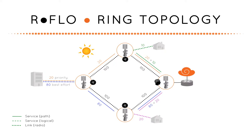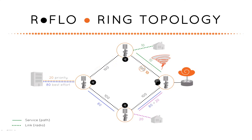Let's now look at what happens under less than ideal conditions. Suddenly, adverse weather moves into the area affecting the top right link, resulting in a severe fade from 100 megabits per second to 10. Our flow reacts within seconds to maintain the best possible service using all available links and bandwidth. The green 10 megabit per second best effort residential service can still be carried over the fading link, but there is no capacity for the 20 megabit per second high priority business service.